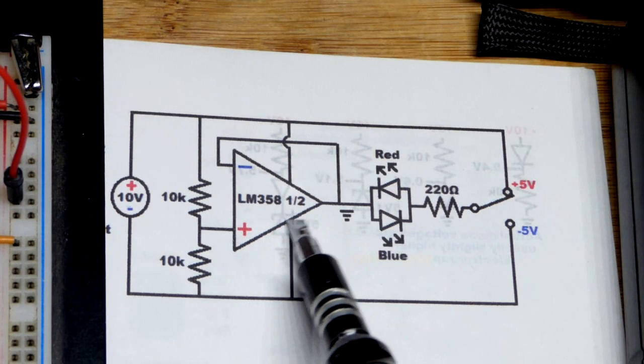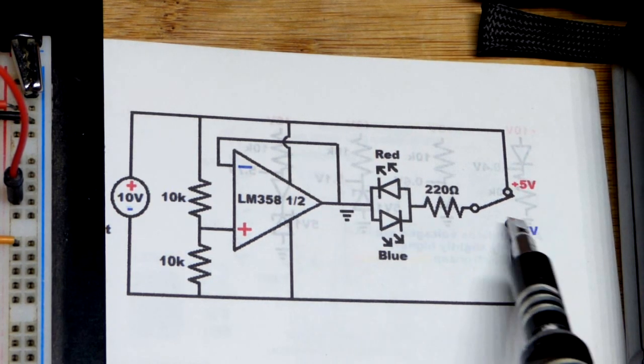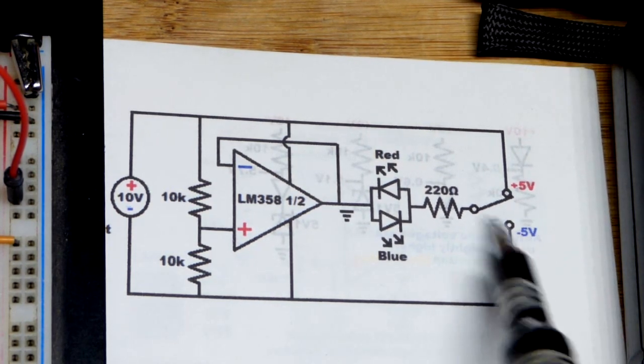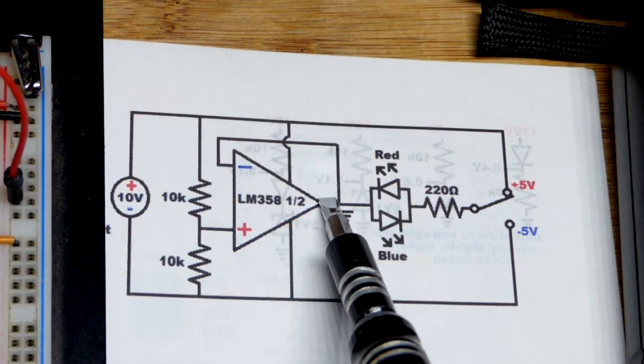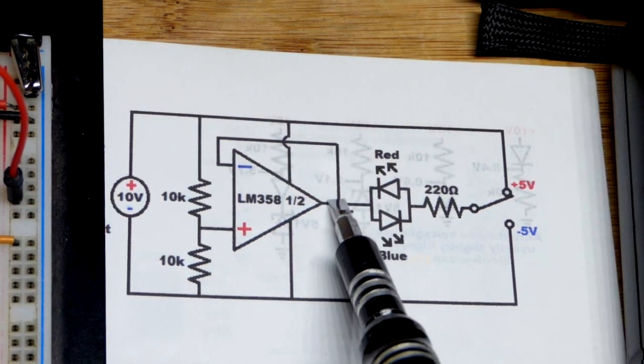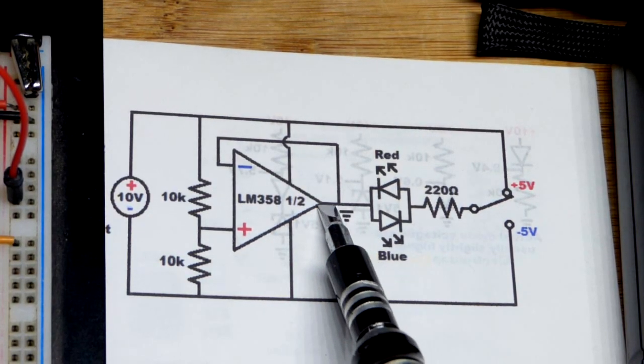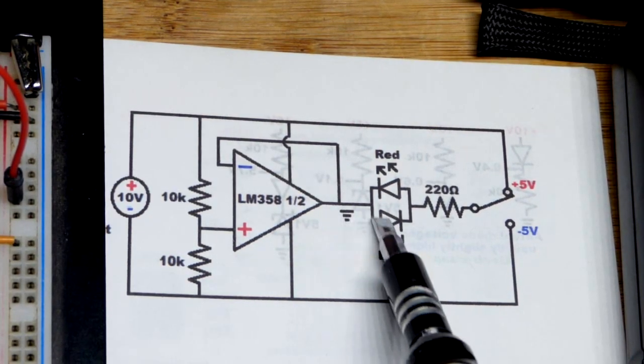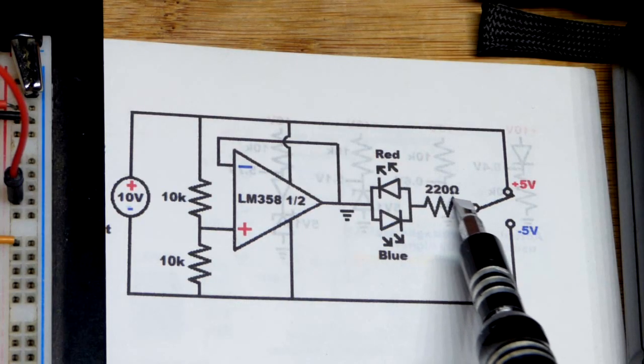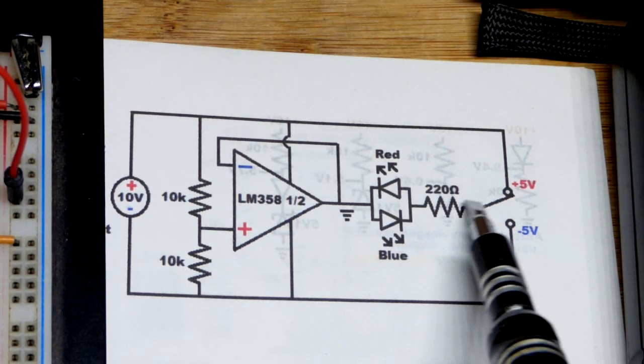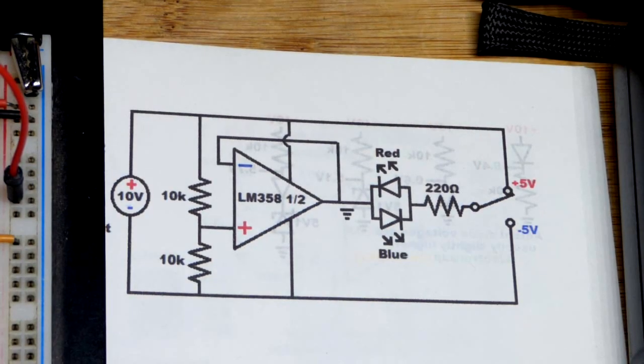When we move the jumper over there, this is 5 volts higher than that 0 volts. So that's negative 5 volts less than 0 volts up there. This is the higher voltage now. Current flows through that LED, the blue one, because of the direction I wired it. And it heads to ground down there.